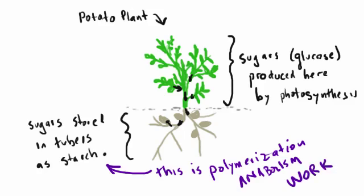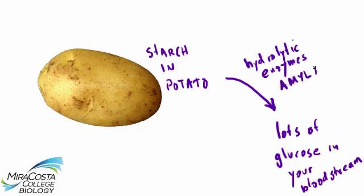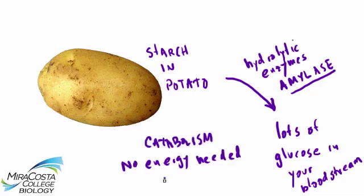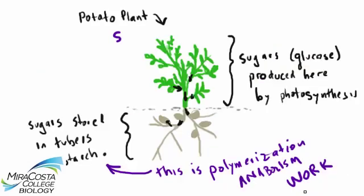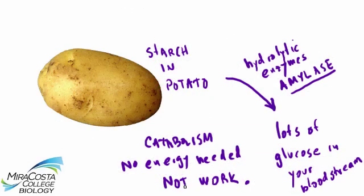Now say you dig up that potato, clean it, and bake it for your dinner. When you eat the potato, the enzymes in your digestive tract carry out the exact opposite reaction of polymerization. Hydrolytic enzymes like the amylase in your saliva break down the starch into molecules of glucose again. But this being a catabolic reaction does not require an outside energy source in order to make it go forward. What the plant is doing when it makes the starch is an example of cellular work, while what you're doing when you digest the starch is not work because no added energy is required.